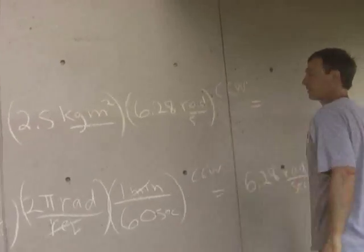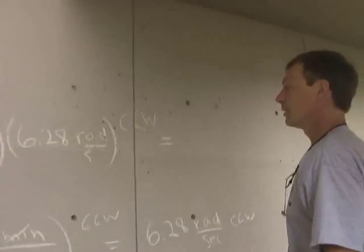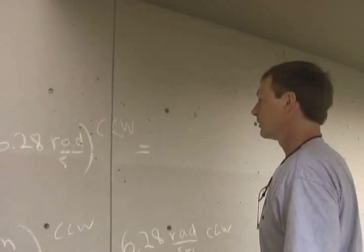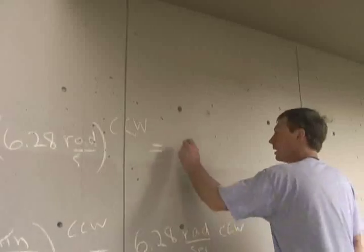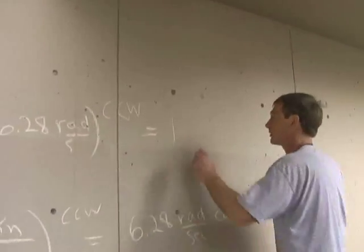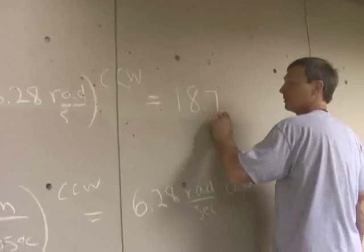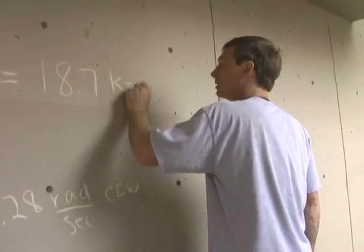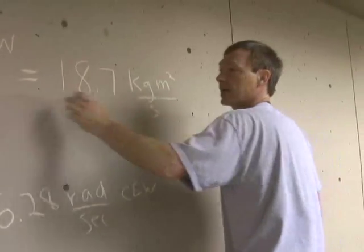Let's see: 13.5, 6, 18.5, 5, 6... 18.7. Now check the math — it should be 18.7. And that's going to be kilogram meter squared per second.